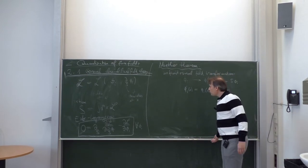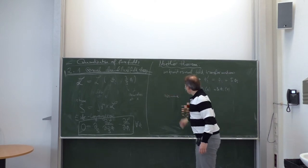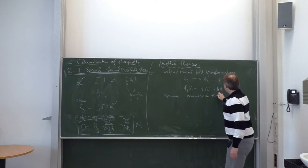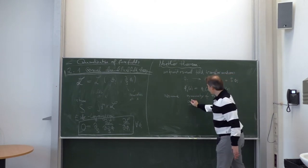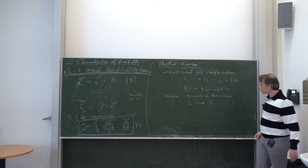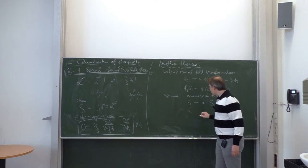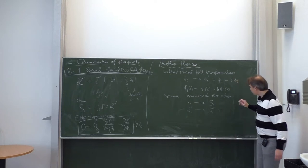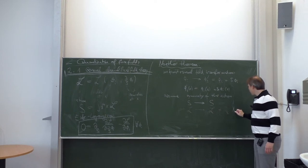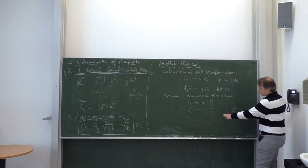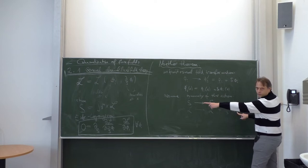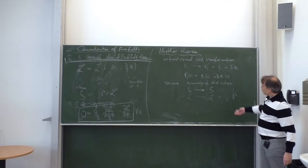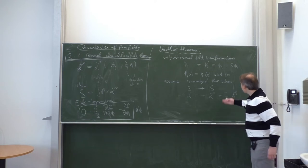This is the form the Noether theorem talks about. We assume that this transformation is a symmetry of the action — under the symmetry transformation, the action S goes into itself. That is equivalent to saying that the Lagrangian density goes into itself or into itself plus a total derivative d_rho of some quantity X_rho, because if you integrate over d⁴x in the action, that term drops out because of boundary conditions at infinity. We allow for such an extra term.